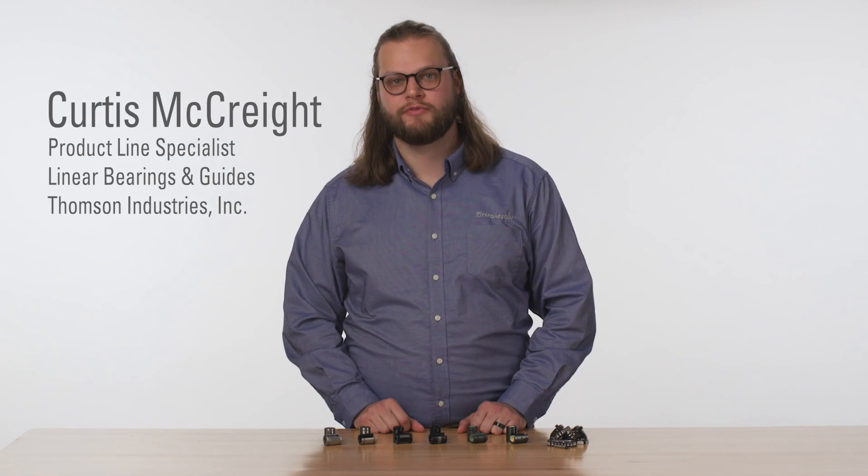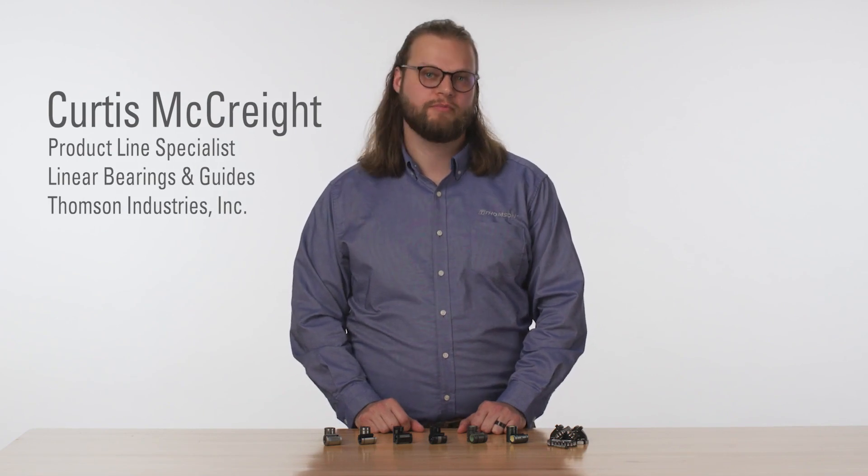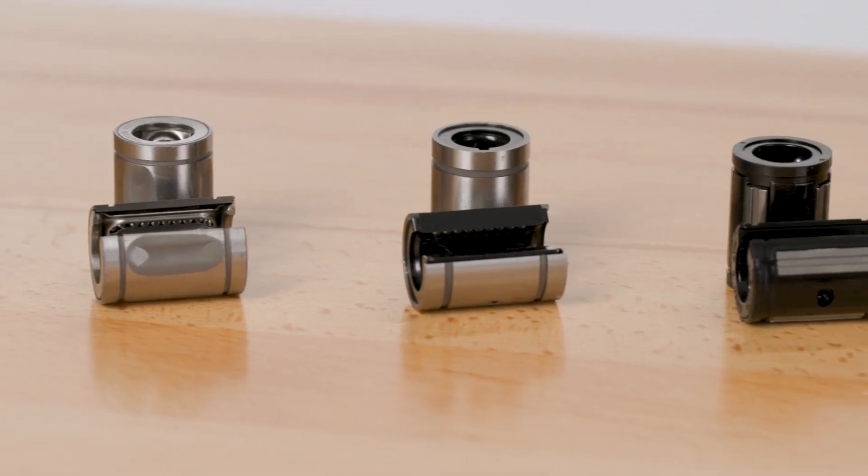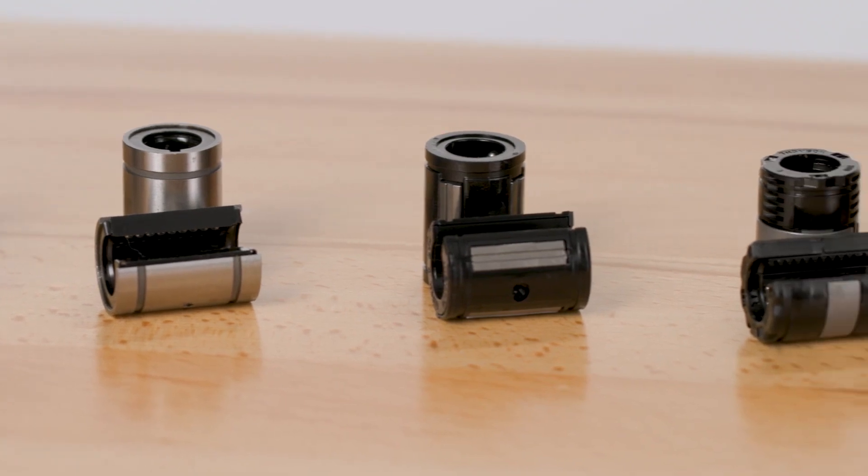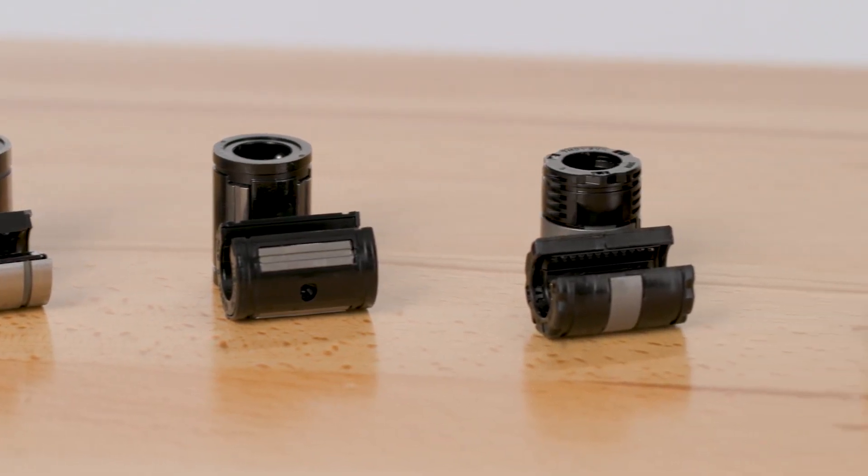Once you determine that round rail is preferred for your application design, it is important to select the right linear bearings to maximize the advantages of round rail and to minimize friction. Thomson offers a wide variety of linear bearings, which sometimes makes choosing the one that is best for your application difficult.